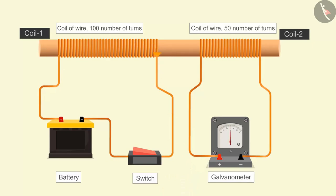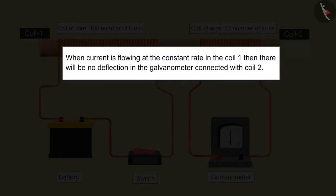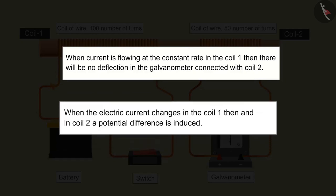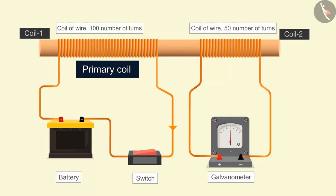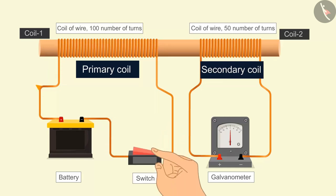So we can infer from this activity that when the current is flowing at a constant rate in coil 1 then there is no effect on the galvanometer connected with coil 2. When the electric current changes in coil 1 then in coil 2 a potential difference is induced. Coil 1 is known as the primary coil and coil 2 is known as the secondary coil. There is a change in the magnetic field around coil 1 when the current changes. Due to this the magnetic field of the secondary coil also changes which induces an electric current in the circuit.